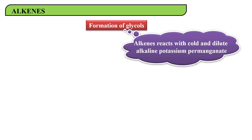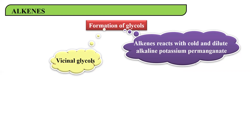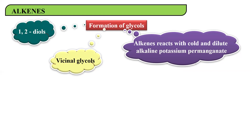Let's understand what glycols are. Whenever an alkene is reacted with cold, dilute, alkaline potassium permanganate (KMnO₄) solution — three conditions to be careful about — you get the formation of vicinal glycols or vicinal diols. This reaction is referred to as Baeyer's test. Vicinal glycols means 1,2-diols: two adjacent carbons each receive an OH group.